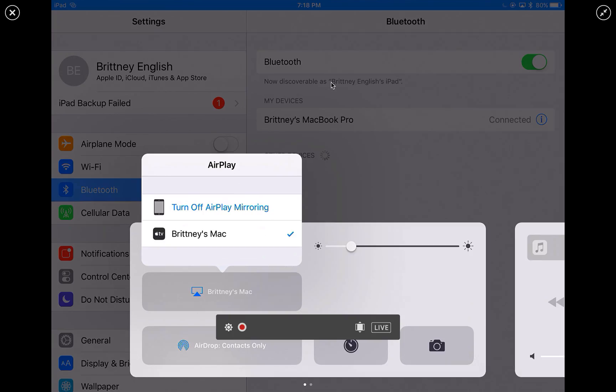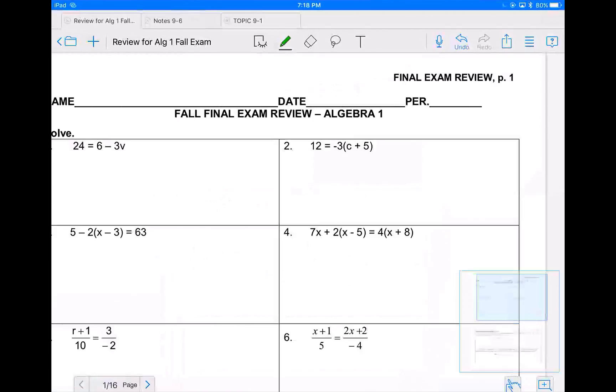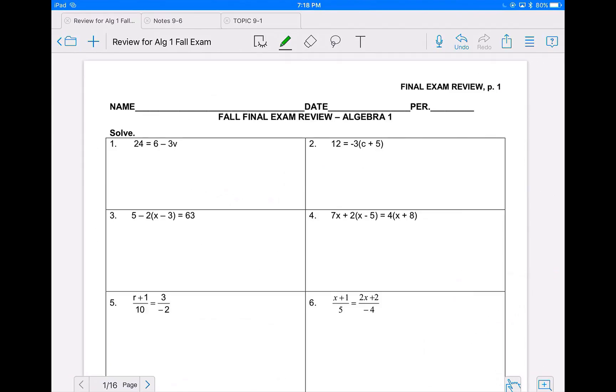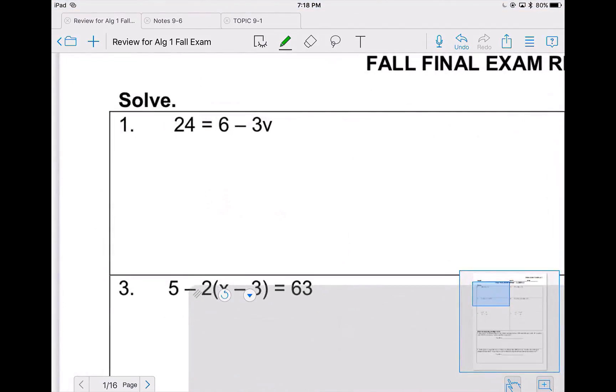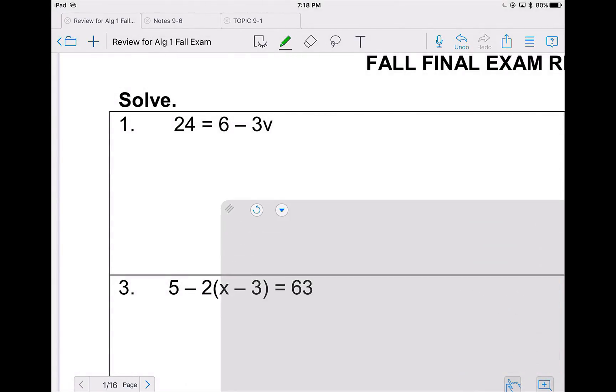This video is for the final exam review for the fall for Algebra 1. This review video will cover pages 1 through 4 and any of the questions on those pages. So starting out with problem 1, in order to solve we are trying to get v by itself. We use GIMDAS or PEMDAS and work backwards.